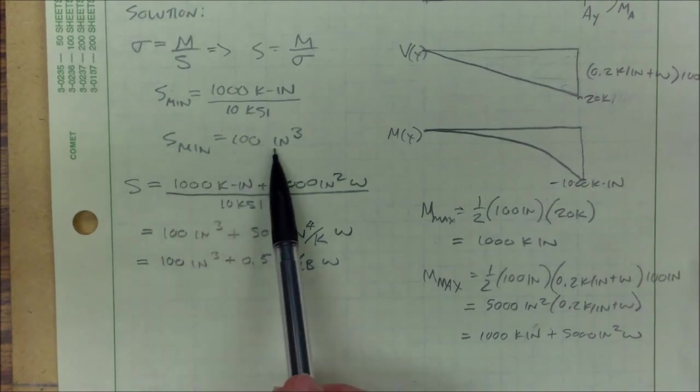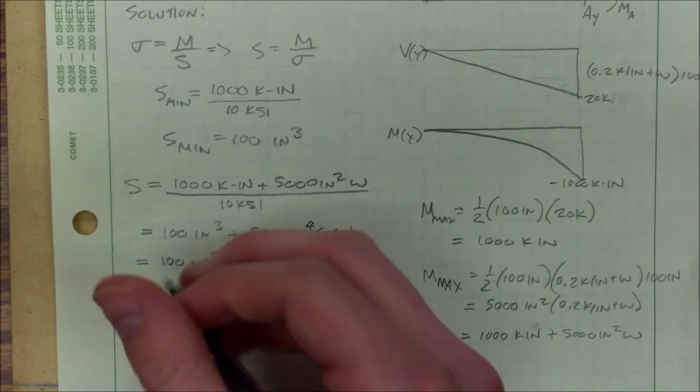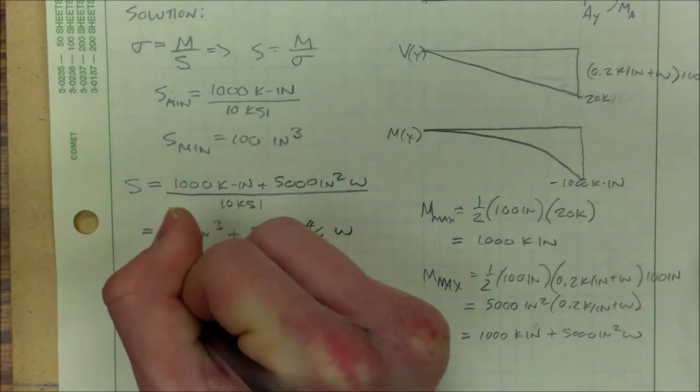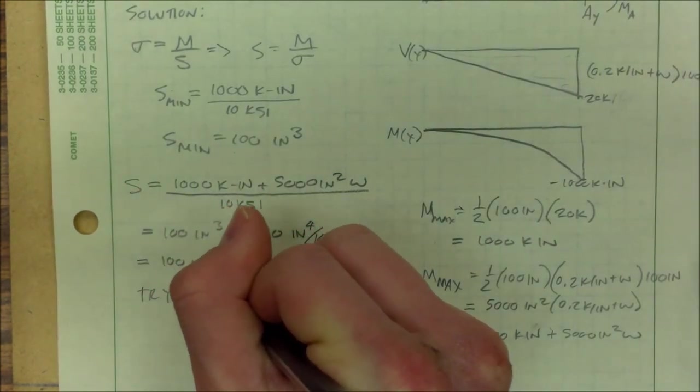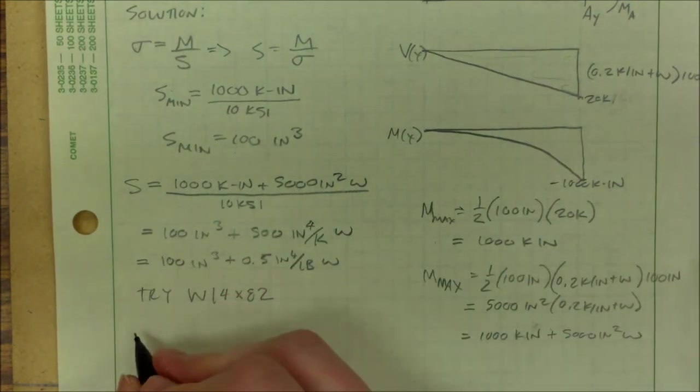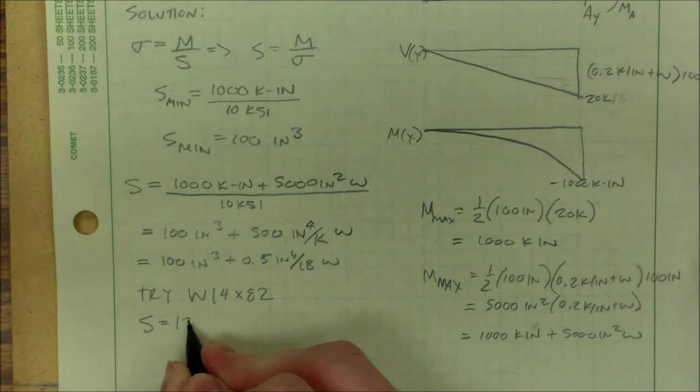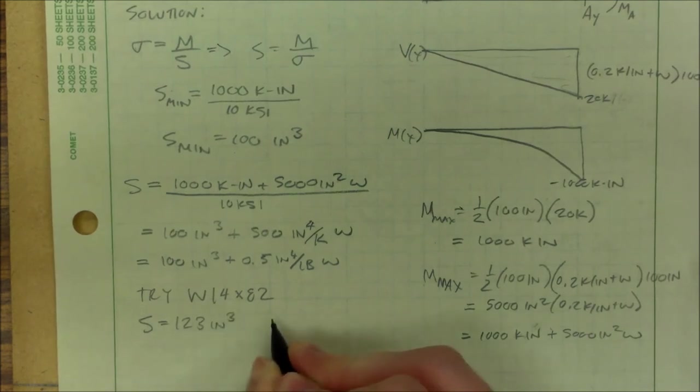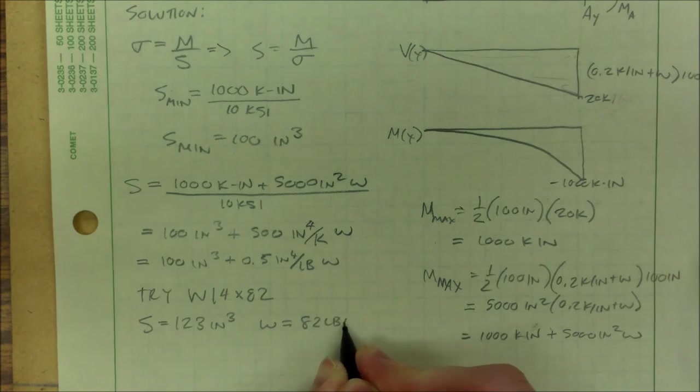I'll convert my w into pound inches later. I'm looking in my w table and the first beam that has a section modulus greater than 100 inches cubed is my W14x82. It has a section modulus of 123 inches cubed and has a weight of 82 pound per feet.